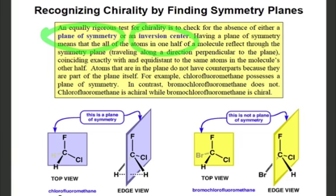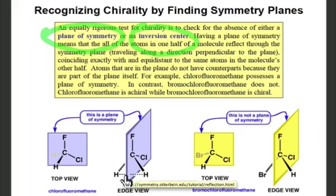An example is the chlorofluoromethane shown here. You can see from these two views that it has a plane of symmetry that divides the molecule perfectly into two equal parts, just like the ladder or the fork or the shovel previously shown. The hydrogen atom upon reflection through the plane finds another hydrogen atom equidistant on the other side.